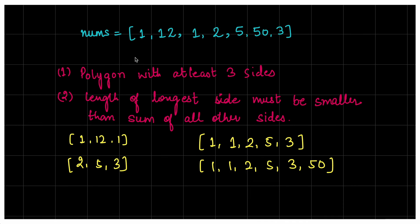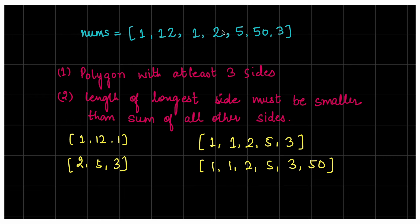The question says you are given an array nums containing lengths of sides of polygons. We are told that a polygon is a closed plane figure with at least three sides — it can be a triangle, rectangle, square, pentagon, and so on. For a polygon to be formed, the longest side out of all the sides must be smaller than the sum of all other sides.